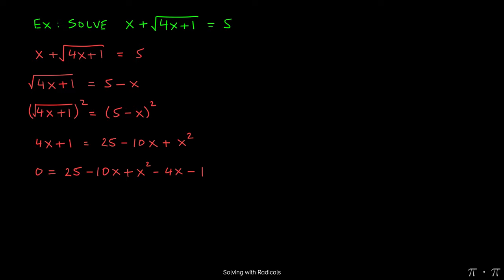This gives us an equation 0 equals 25 minus 10x plus x-squared, the original right-hand side, minus 4x minus 1. Combining like terms and just rearranging the terms gives us x-squared minus 14x plus 24 equals 0.